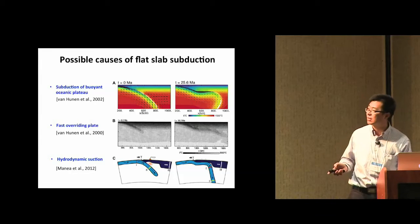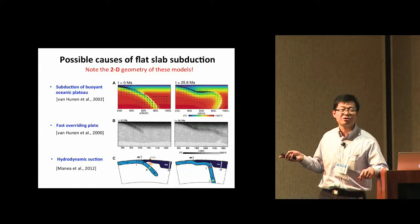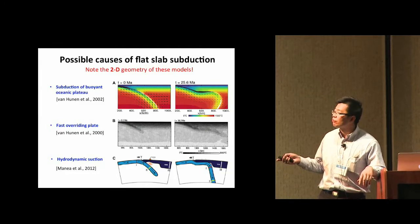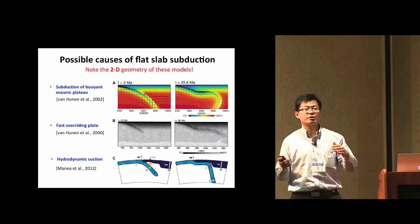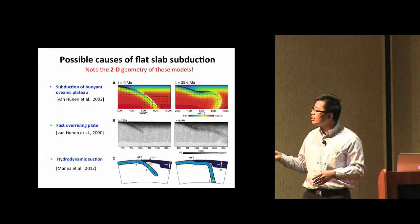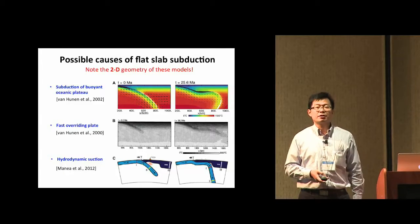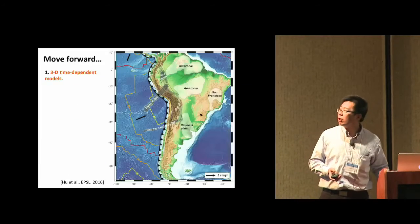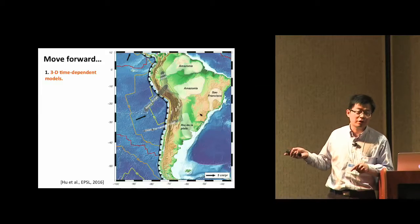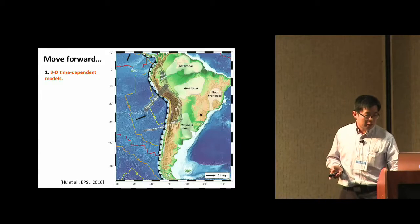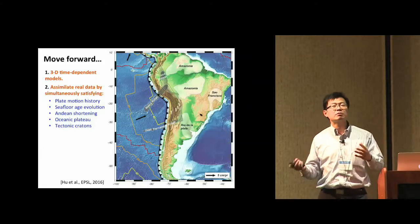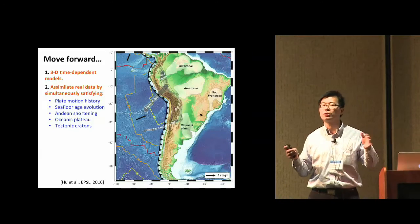These are all conceptual 2D models, which are easy but too generalized. For the South America flat slab — the best known flat slab still happening today — people really don't know which is the dominant mechanism. To move forward we are moving from 2D to 3D plus time-dependent — effectively 4D dynamic models. More importantly, this is a data assimilation model, which differs from generic models that use arbitrarily defined initial conditions.